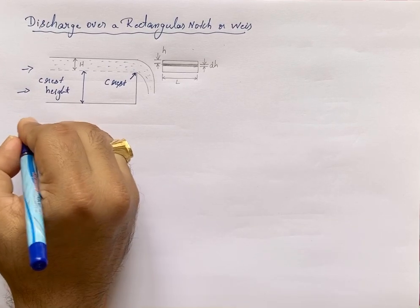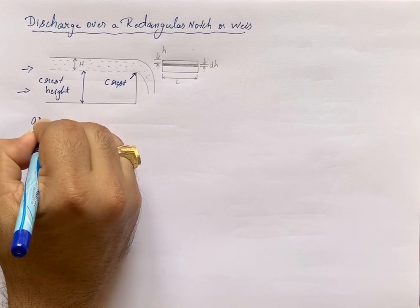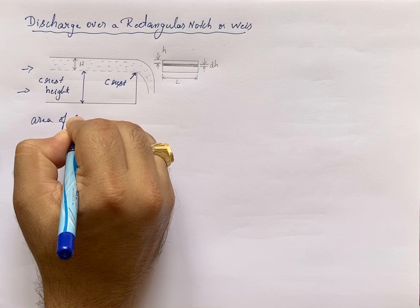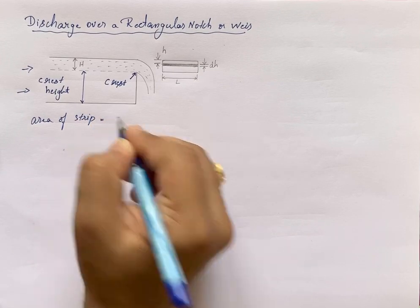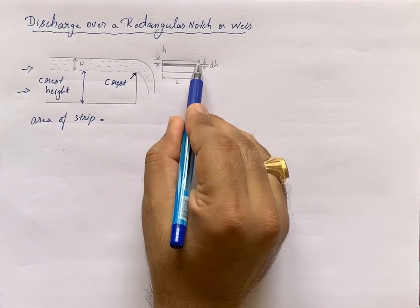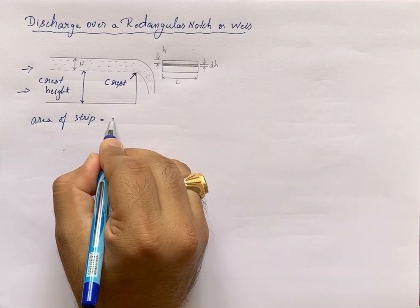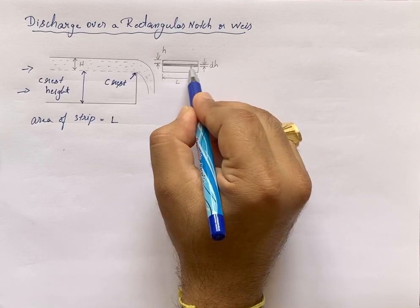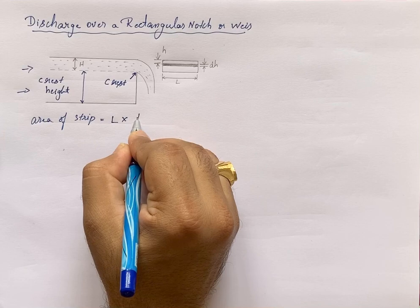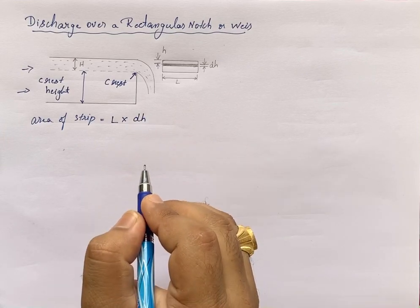What is the area of the strip? Area of strip is base times height. Here the base is L, and we consider only the small elemental strip dH, which is the height.